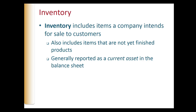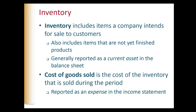For instance, lumber at a cabinet manufacturer, steel at a construction firm, and rubber at a tire manufacturer are part of inventory because the firm will use them to make a finished product for sale to customers. We generally report inventory as a current asset on the balance sheet — an asset because it represents a valuable resource to the company, and current because the company expects to convert it to cash in the near term.